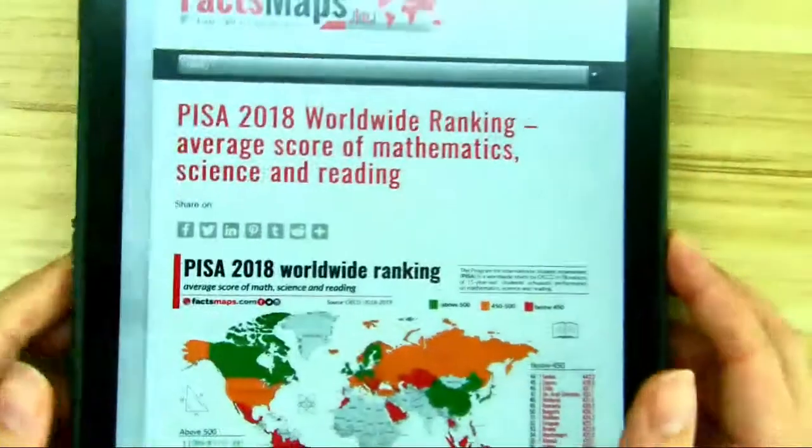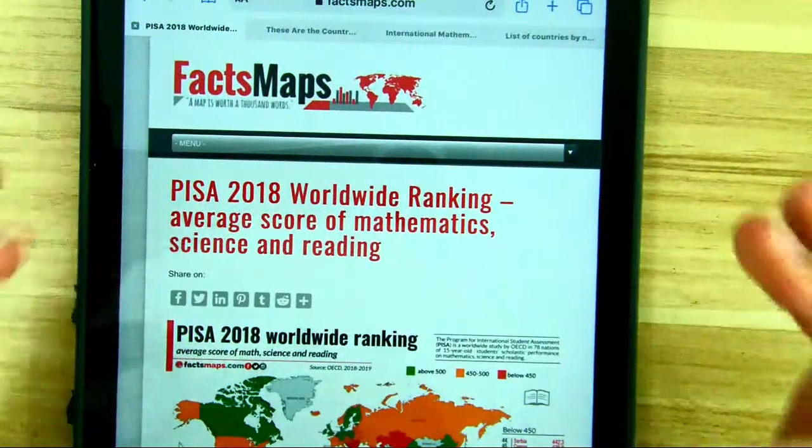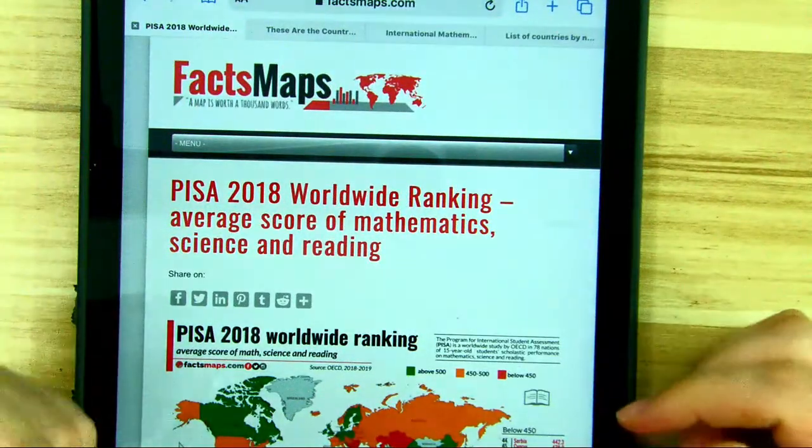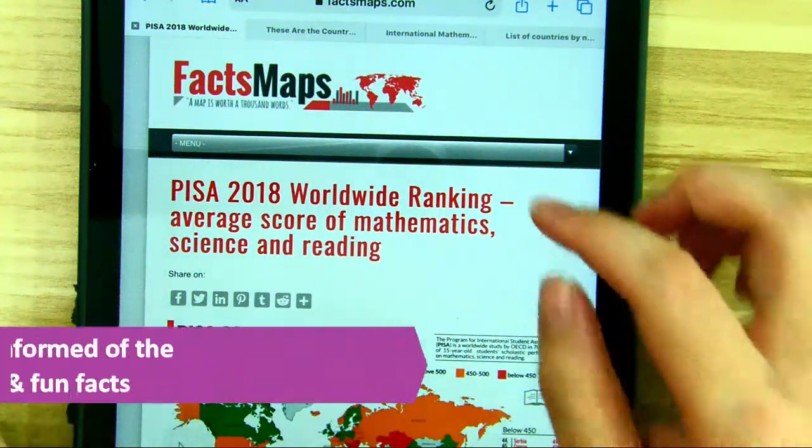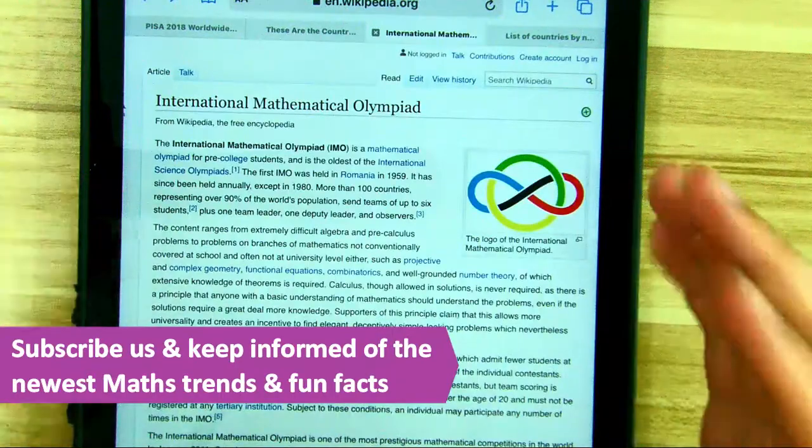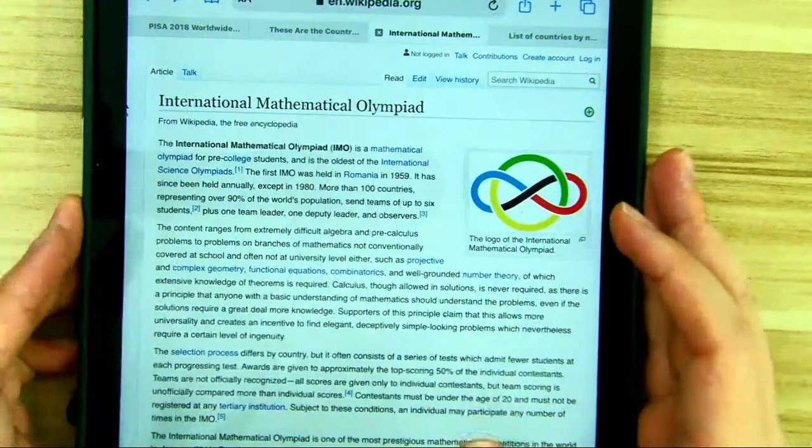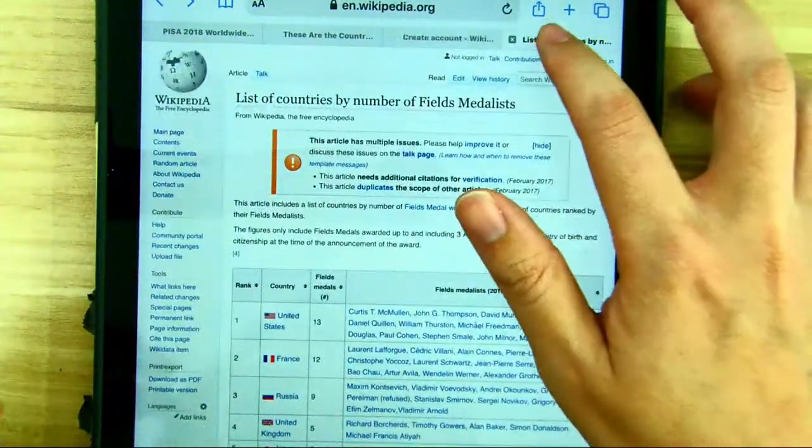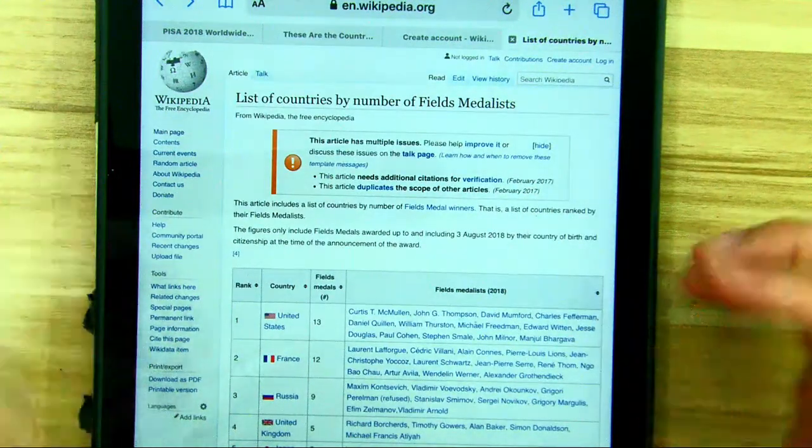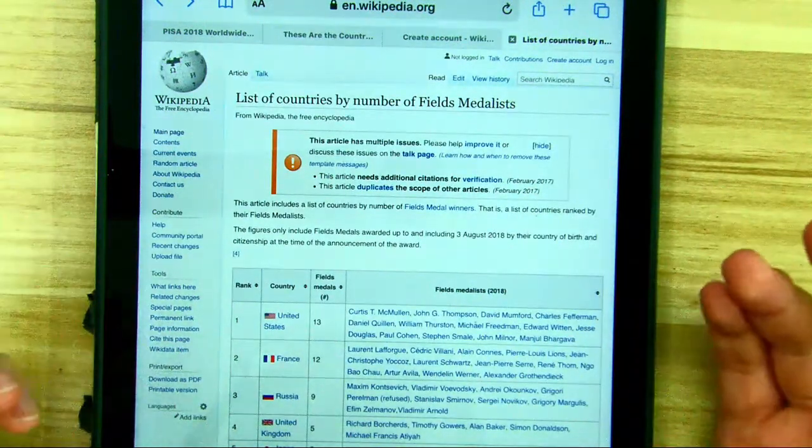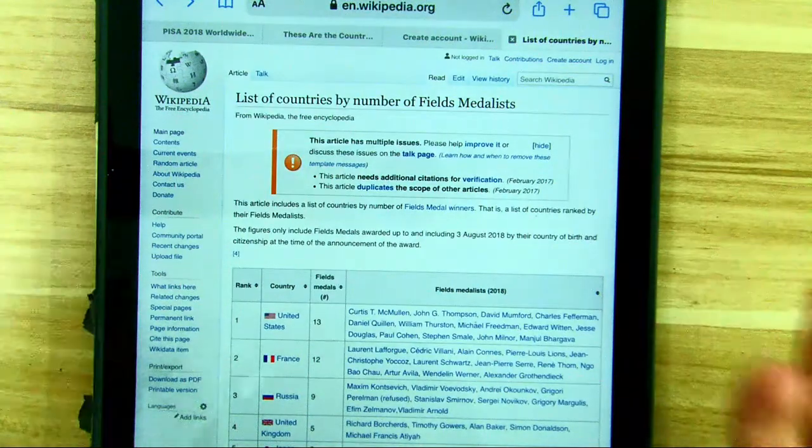I made the basic research in Google and found three international results. First, the PISA, the Program for International Student Assessment. Second, the IMO, International Mathematical Olympiad. And third is the Fields Medal. It's like the Nobel Prize for math, because Nobel Prize doesn't have a math prize.